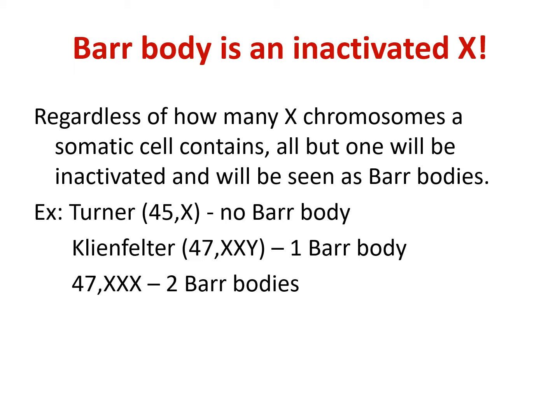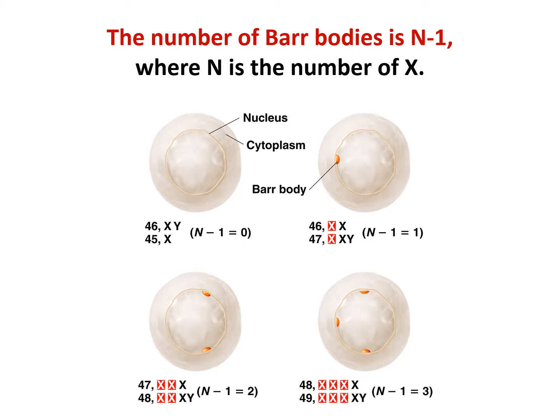For example, in Turner syndrome (45X), there is no Barr body — there is physically one X chromosome which is active. In Klinefelter syndrome (XXY), there are two X chromosomes: one stays active, one becomes inactive, giving one Barr body. In triple X syndrome, one stays active and there are two Barr bodies.